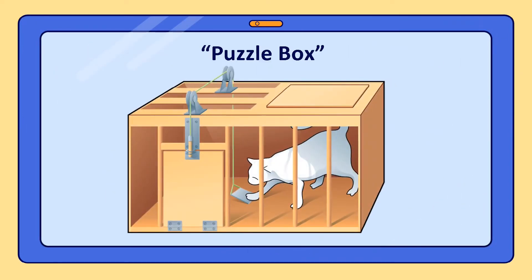Thorndike studied trial and error learning through experiments on cats using a box he called a puzzle box. A hungry cat was placed in the box and the door was closed, which could be opened by pressing a latch. A fish was placed outside on a plate. The cat was given 100 trials — 10 in the morning and 10 each afternoon for 5 days. The cat was fed at the end of each experimental period and given nothing more until the next session.